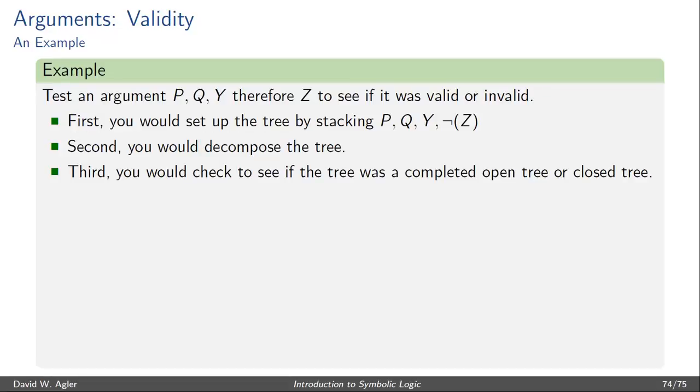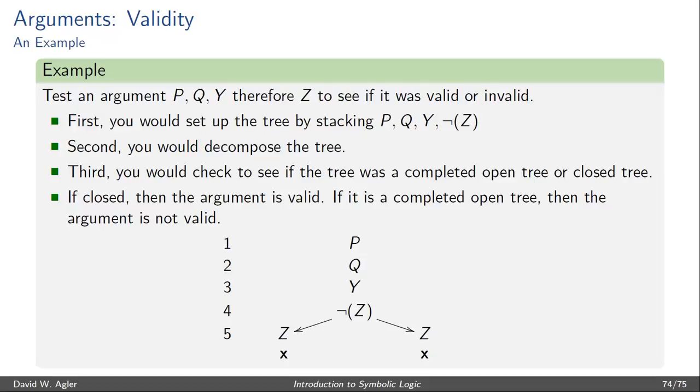If it was a completed open tree, then we would know that the argument is invalid. If it were a closed tree, then it would be valid. So here's a kind of sketch, although here we aren't making use of any decomposition rules.